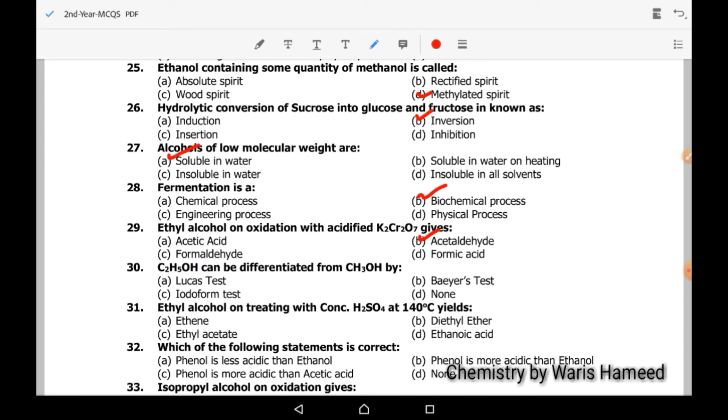Ethanol can be differentiated from methanol by iodoform test. Option C is correct. Iodoform test is the method by which we can differentiate between ethanol and methanol.